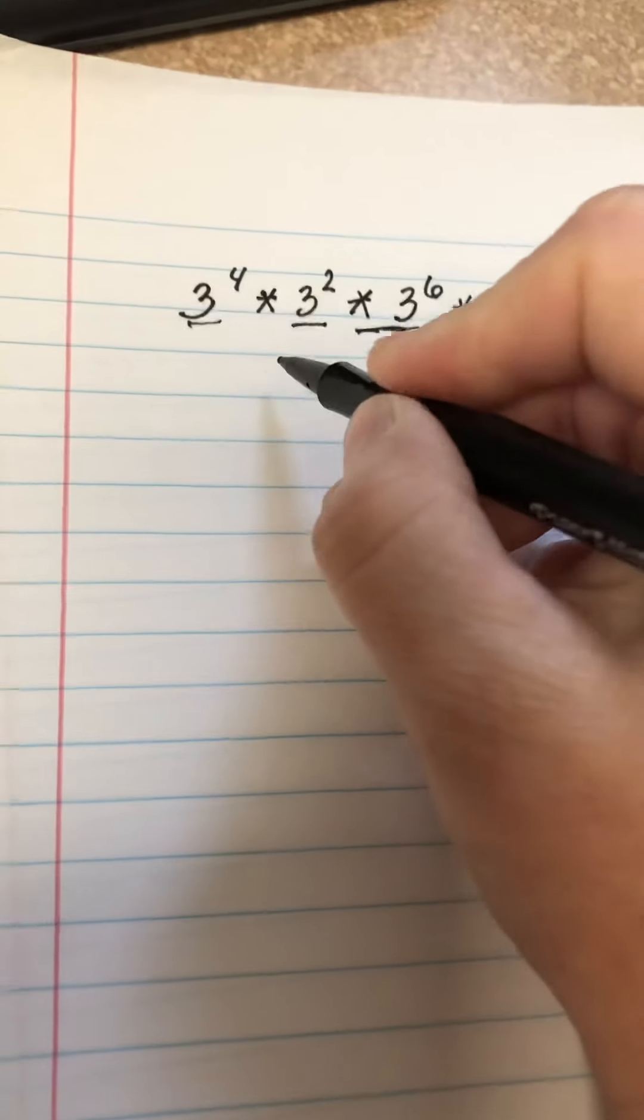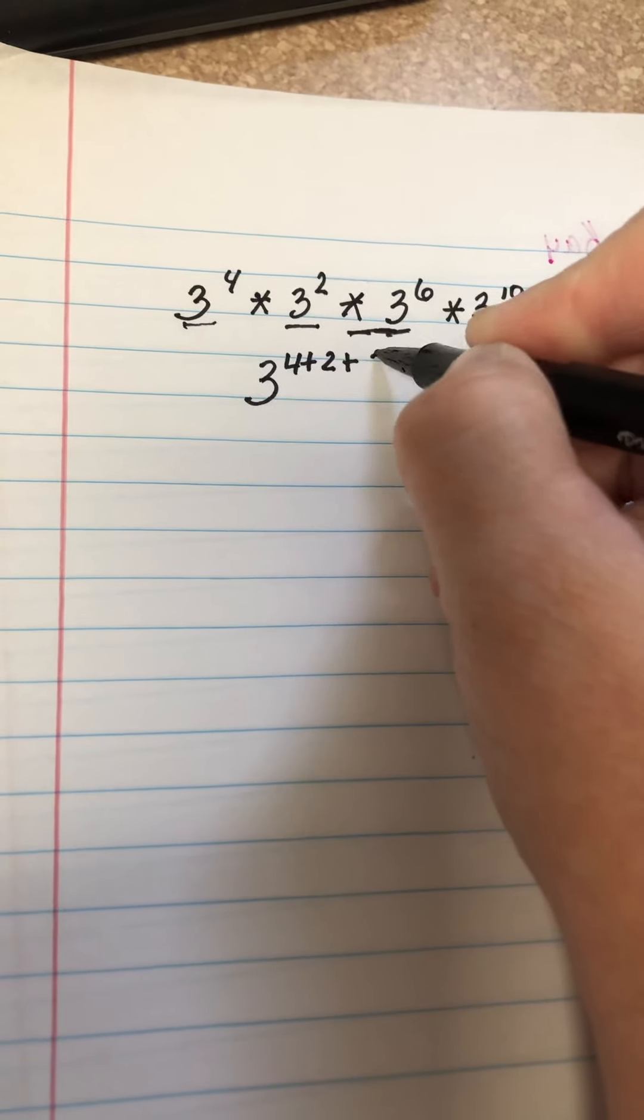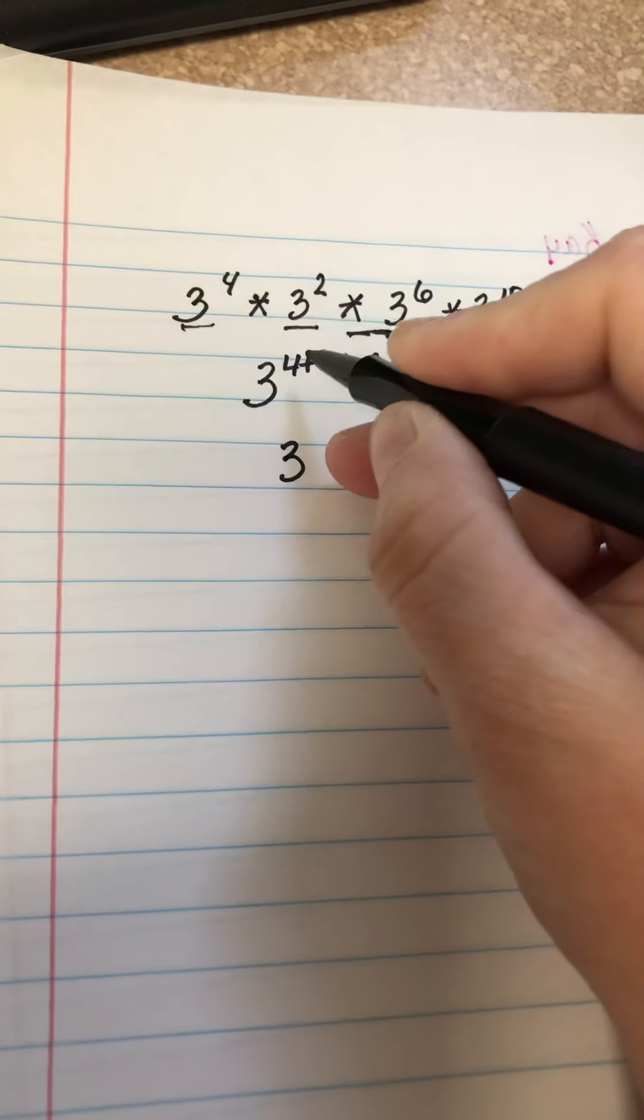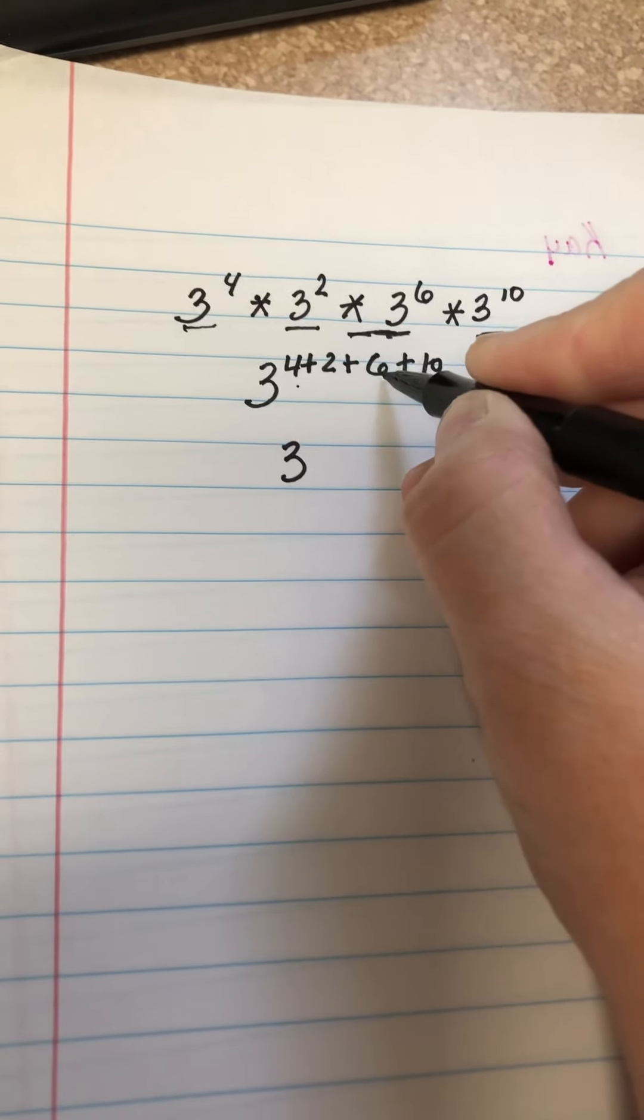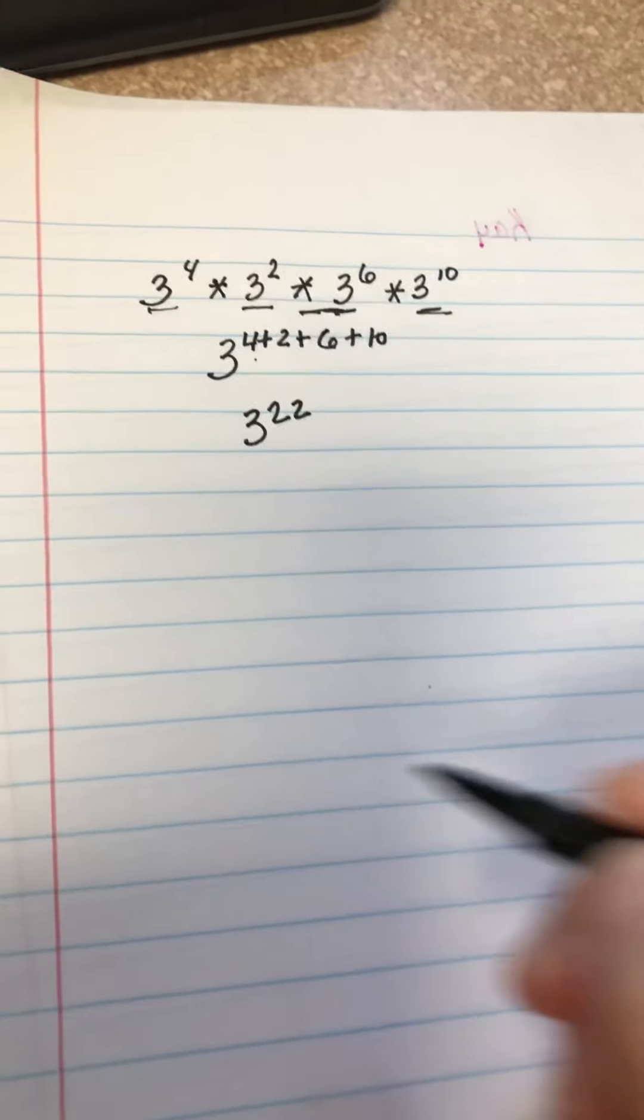We simply leave the base and add all exponents. So, 3 to the—4 plus 2 is 6, 6 plus 6 is 12, 12 plus 10 is 22. So, 3 to the 22nd power.